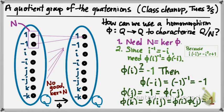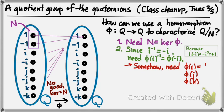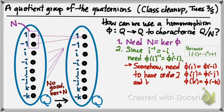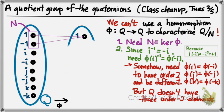Because i, j, and k are all interchangeable elements in the quaternion group, there really is no way to construct a homomorphism from Q to Q whose kernel is exactly N. In order to do so, we would need φ(i), φ(j), and φ(k) — which should respectively equal φ(-i), φ(-j), and φ(-k) — to each be distinct elements of order two. But Q just doesn't have the goods: there's only one element of order two inside the quaternion group, and that's -1. So we can't use a homomorphism from Q to Q to characterize this quotient group.